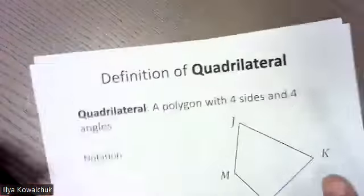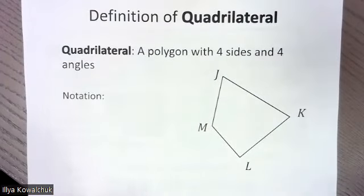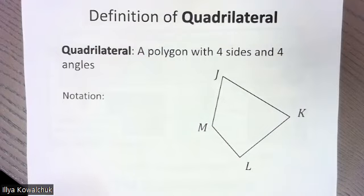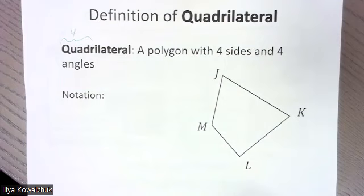Let's jump in. We took notes on this — we got the definition of a quadrilateral. That's going to be a polygon with four sides and four angles. The polygon also tells us that it has no curved sides, so we know it needs to be a polygon with four sides and four angles. 'Quad' means four.